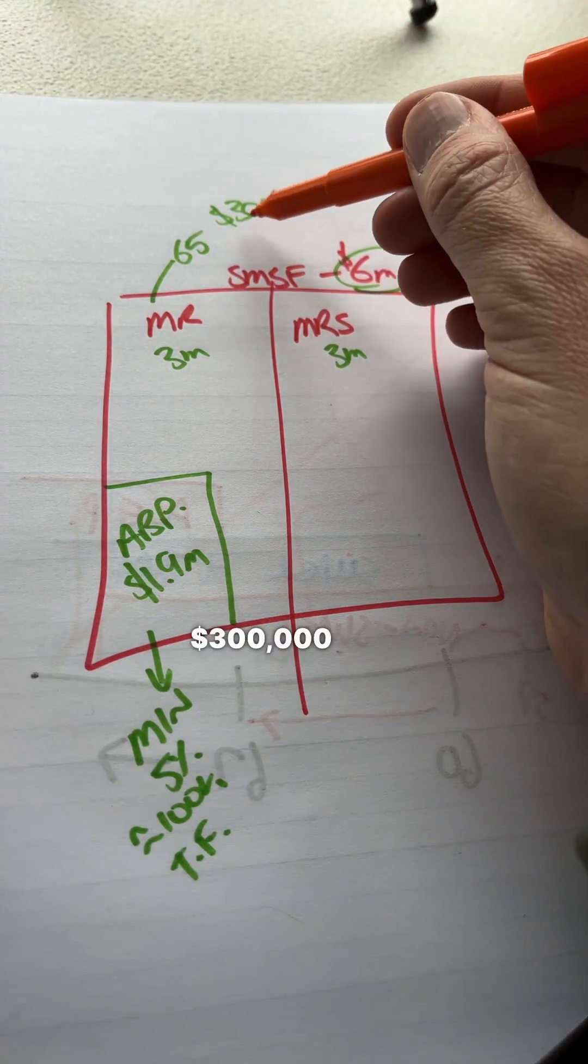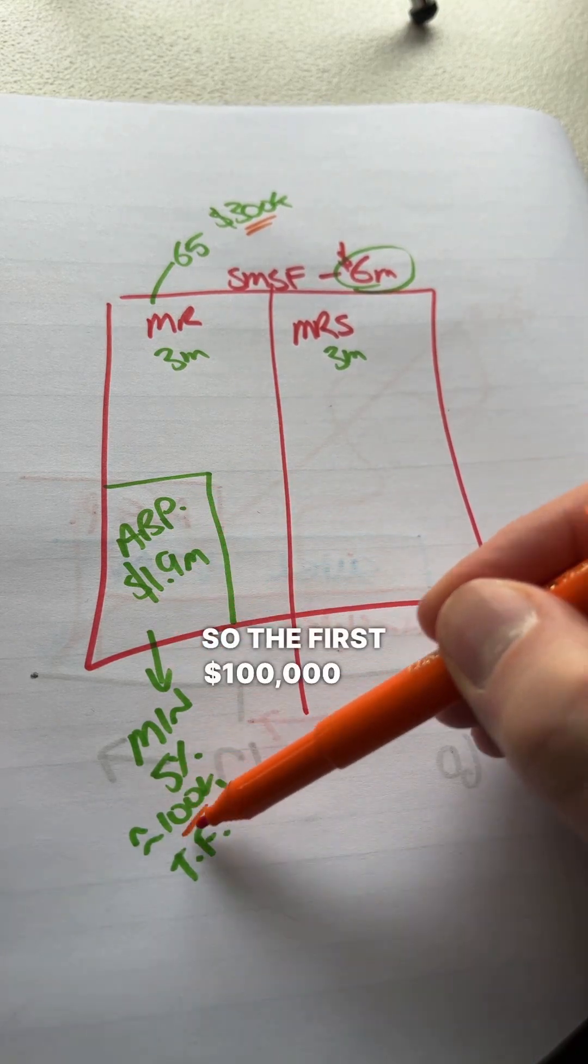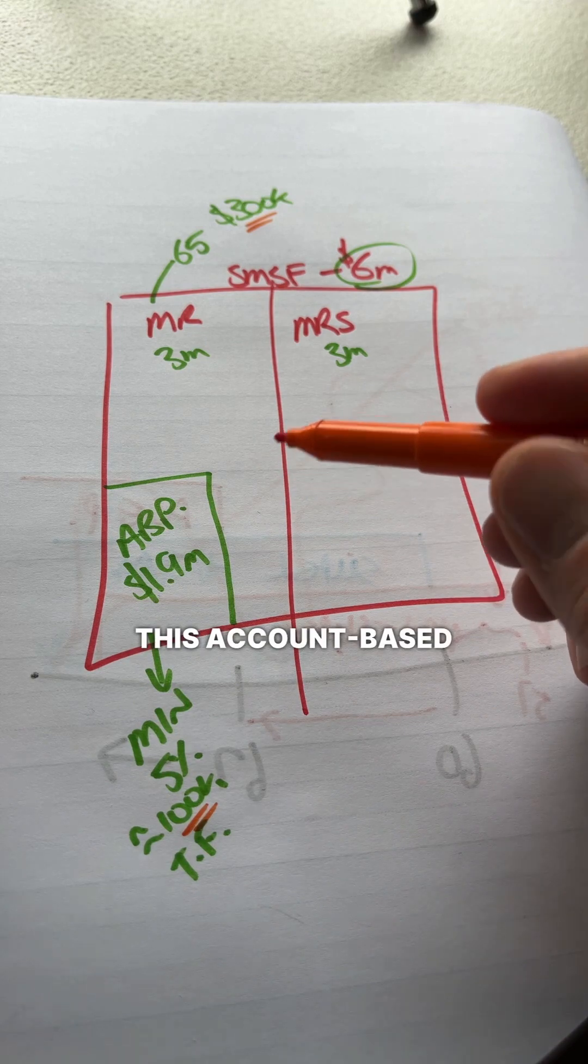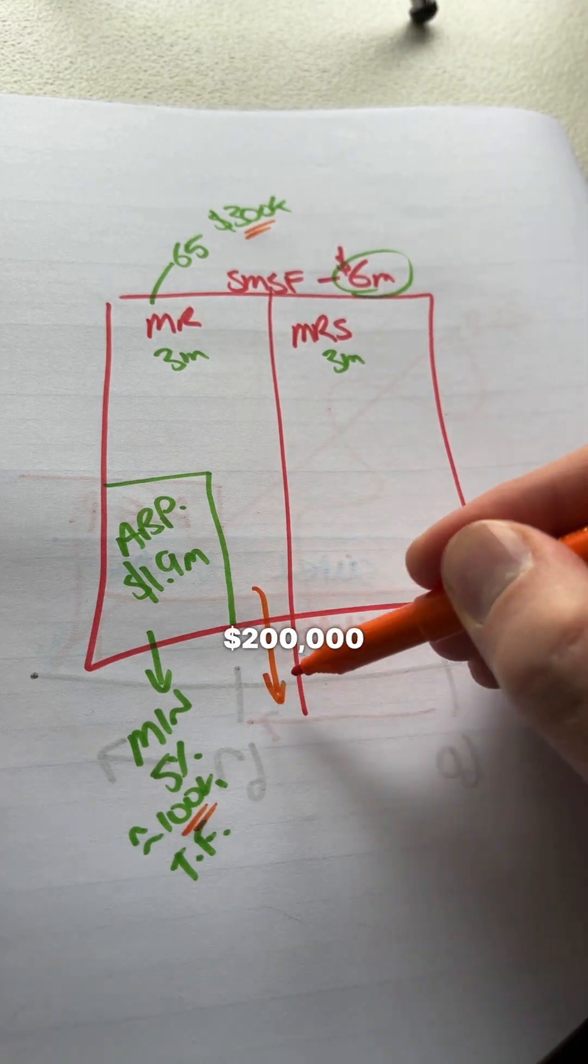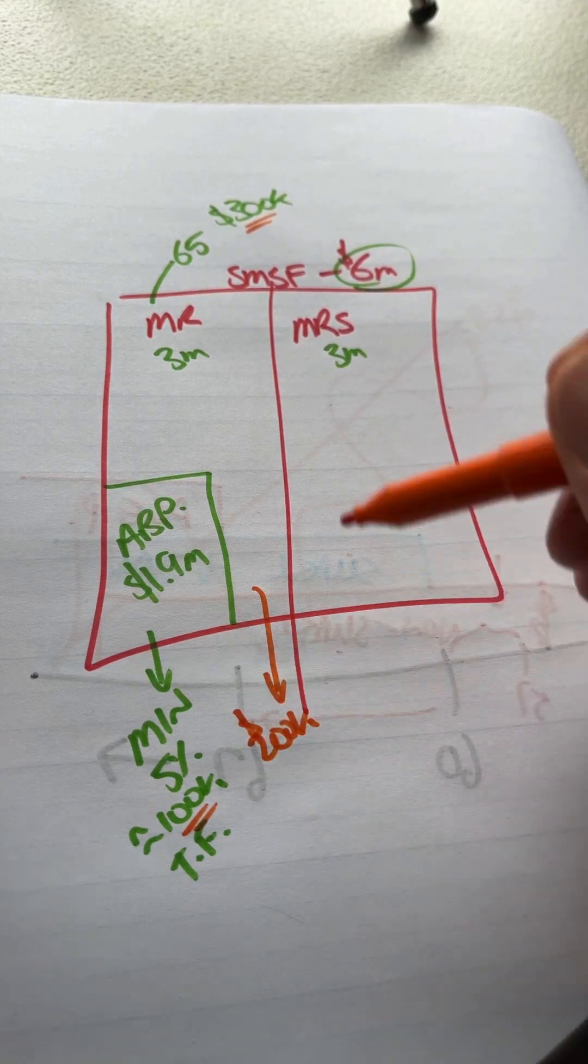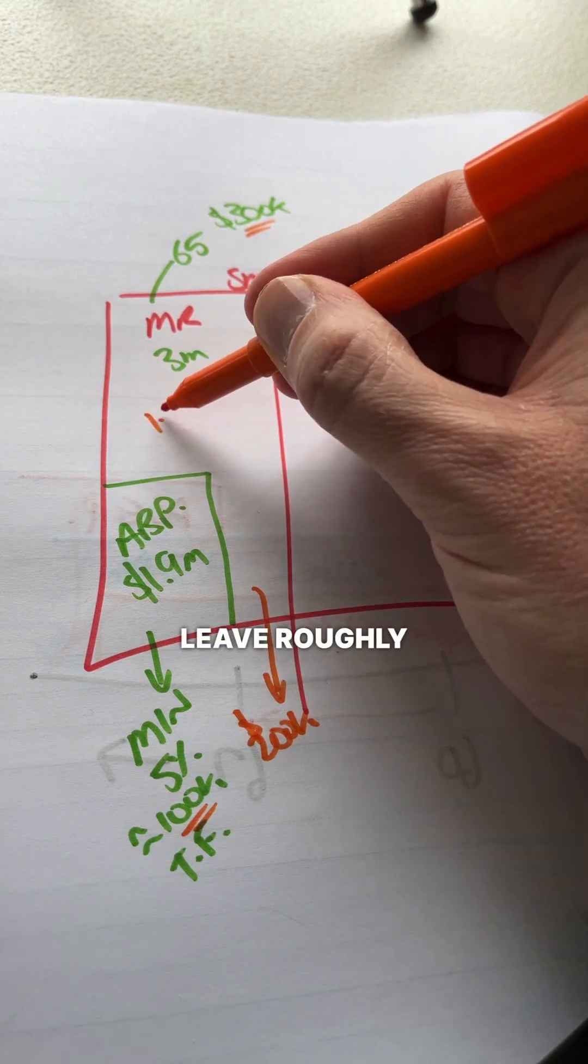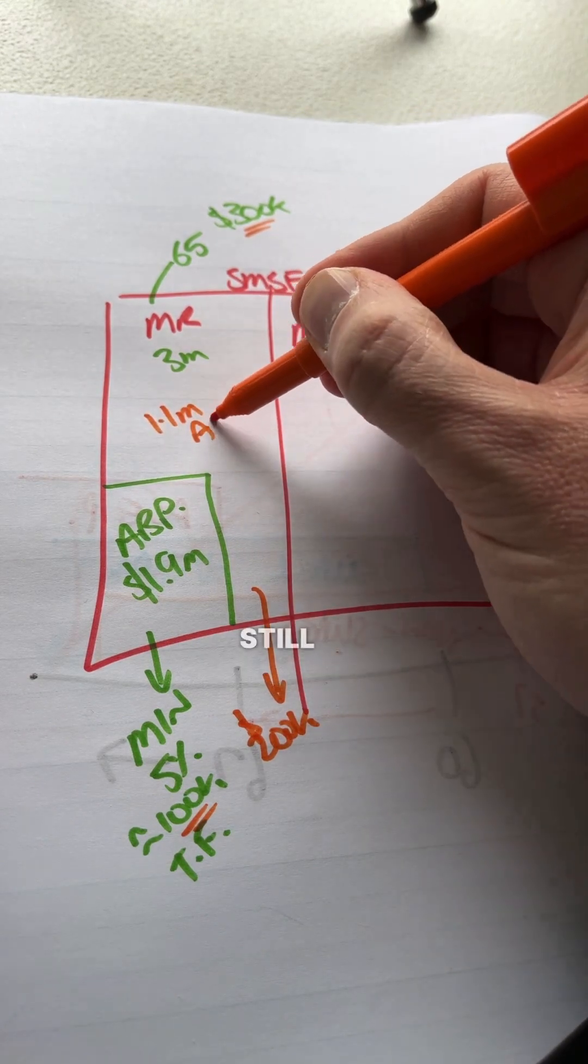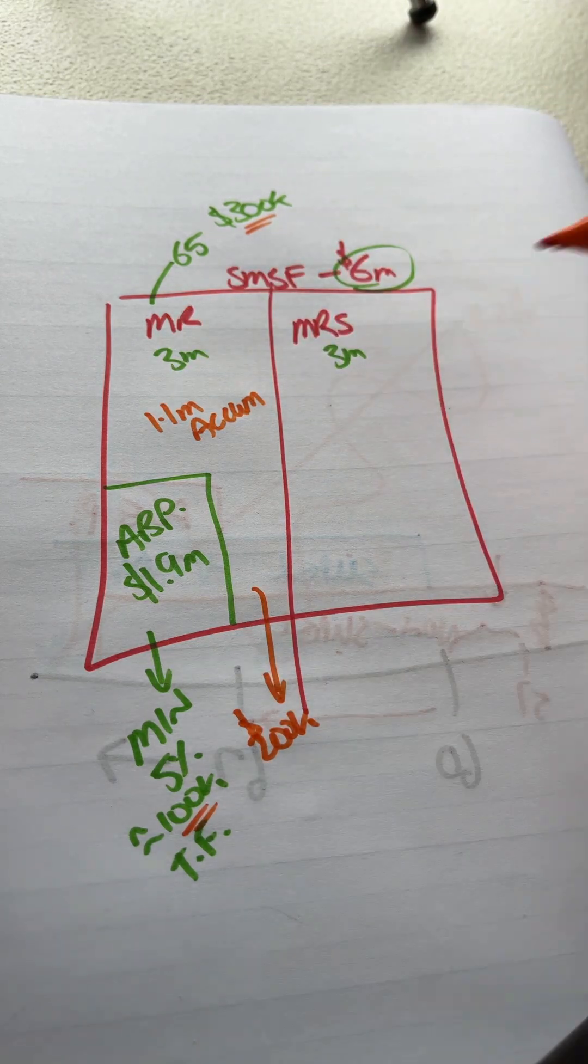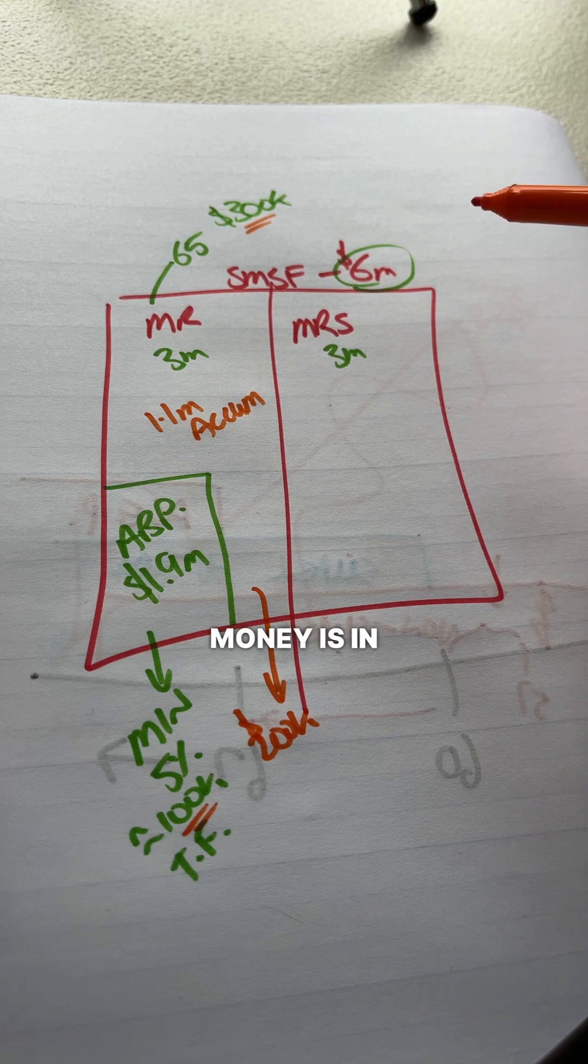Now, I said they want to take $300,000 out of the SMSF. So the first $100,000 of that will be treated as a pension payment that comes from this account-based pension that's started. The remaining $200,000 will actually come out of the accumulation side. So we've started a pension with $1.9 million. That's going to leave roughly $1.1 million still in the accumulation side for the husband. The wife's not yet old enough to start one of these retirement pensions. So all of her money is in accumulation.